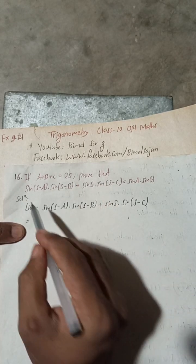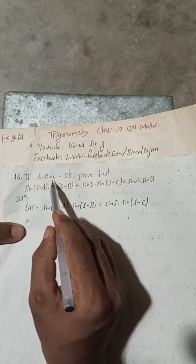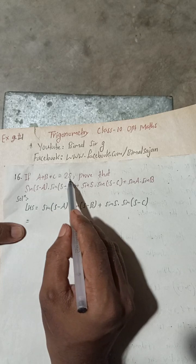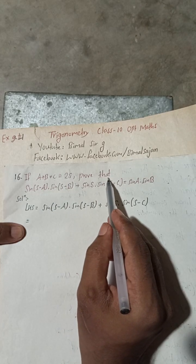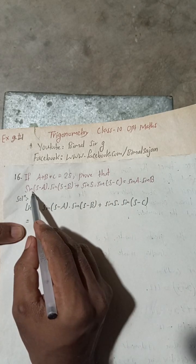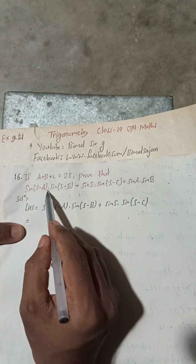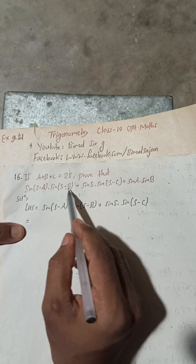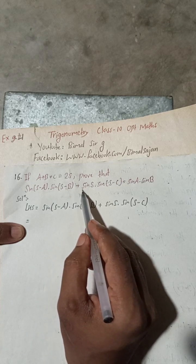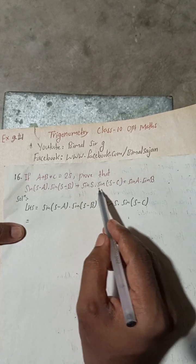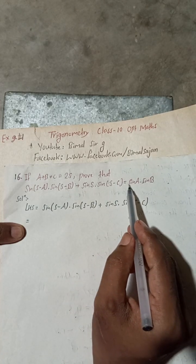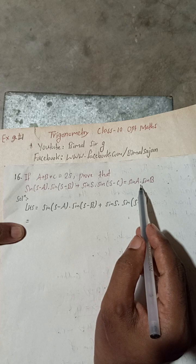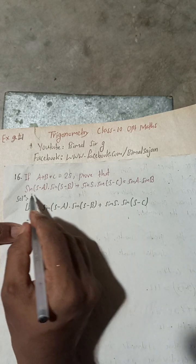Let's begin the solution. If a + b + c = s, prove that sin(s−a)·sin(s−b) + sin(s)·sin(s−c) = sin(a)·sin(b).